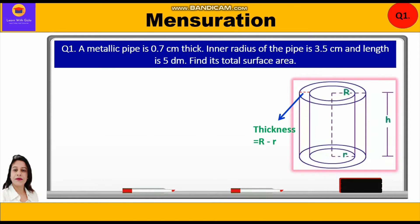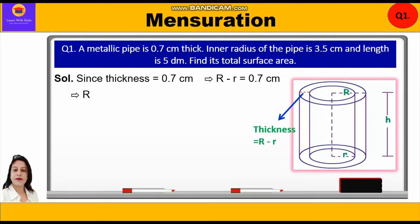Since thickness equals 0.7 cm, outer radius minus inner radius equals 0.7 cm. Therefore, outer radius R equals 0.7 + inner radius r, which is 0.7 + 3.5 = 4.2 cm.